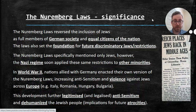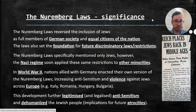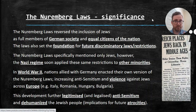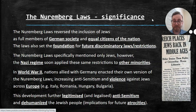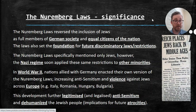This development further legitimized and legalized anti-Semitism and dehumanized the Jewish people, which would have implications for future atrocities. It's page one of the playbook in how to get away with murder: make your target, your victims, seem less than human, because you can get away with treating non-humans poorly. So if you're trying to commit a genocide, you will slowly and gradually dehumanize your enemy so that it's less shocking when you treat them so very poorly.